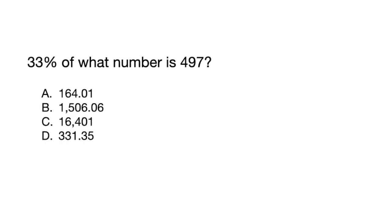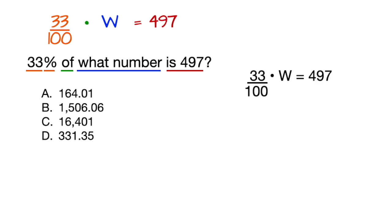Let's try another example. 33% of what number is 497? So we're going to do the same thing and write what we read. 33% means divide by 100. Of means multiply. What number means place a variable there. Is means equals 497. And just like that, we have an equation.